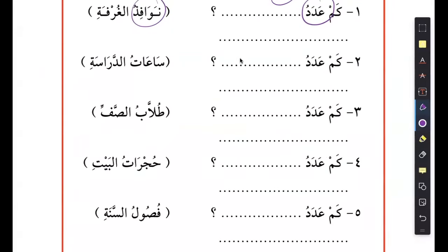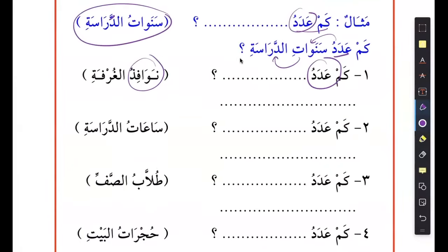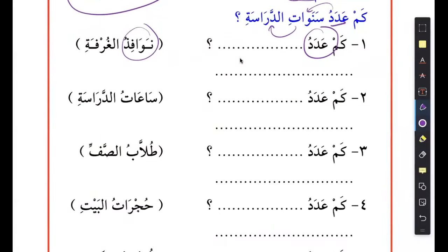If you just do a few of them it will be easy, this is very simple. I'll just do one here: kam adadu sanawat id dirasa. Sa'at id dirasa - sa'at is the hours - how many hours of studies, you will say sa'at id dirasa, because it's going to be in idafa format. Adadu - as you can say - it's idafa.